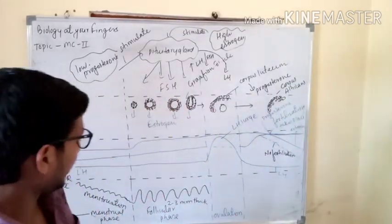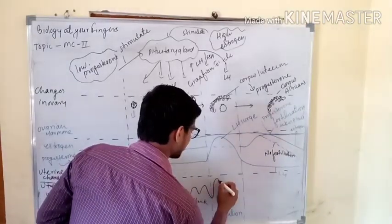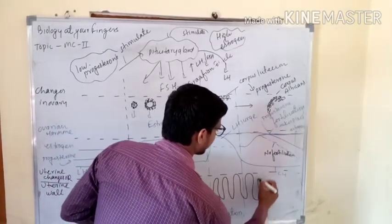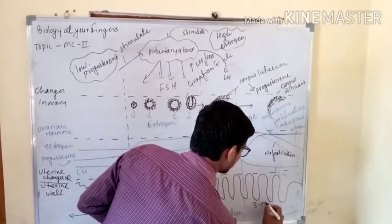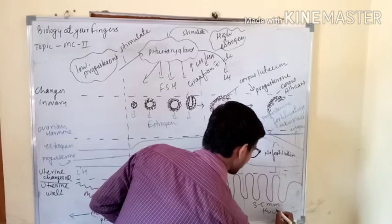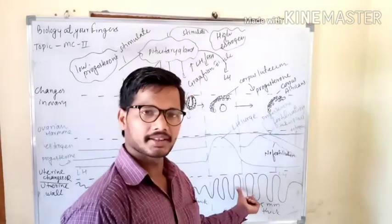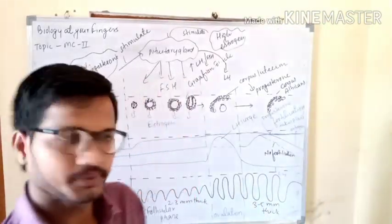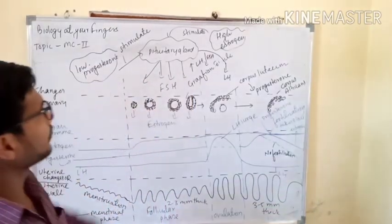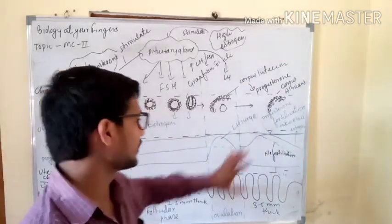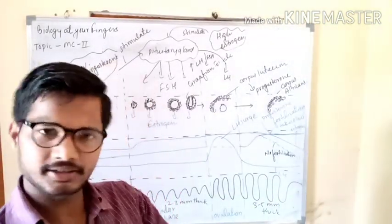Under the influence of these hormones, the uterine lining will become thicker, up to 3 to 5 mm thick. If fertilization takes place, the zygote will be fixed in this lining. If fertilization does not take place, this lining will again break. This is all about the certain kinds of hormones and their regulation — the graphical representation of the menstrual cycle. Let's quickly recap.